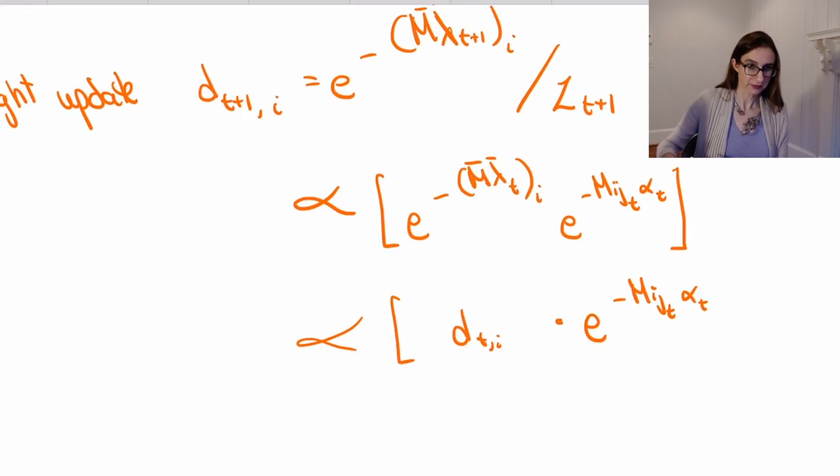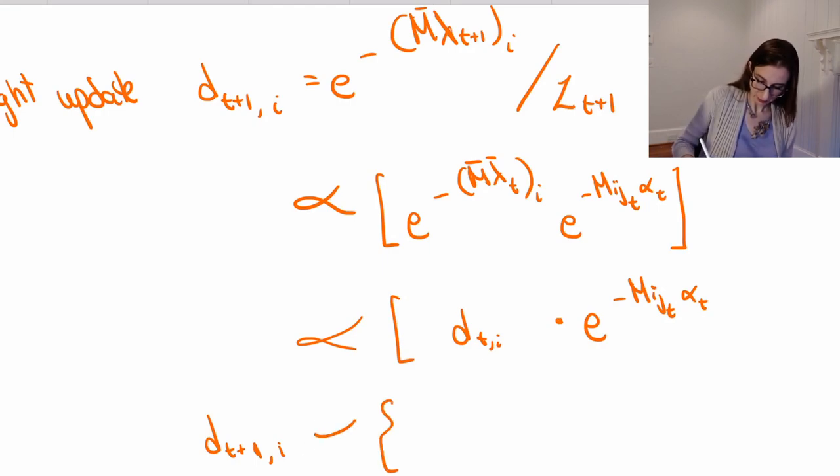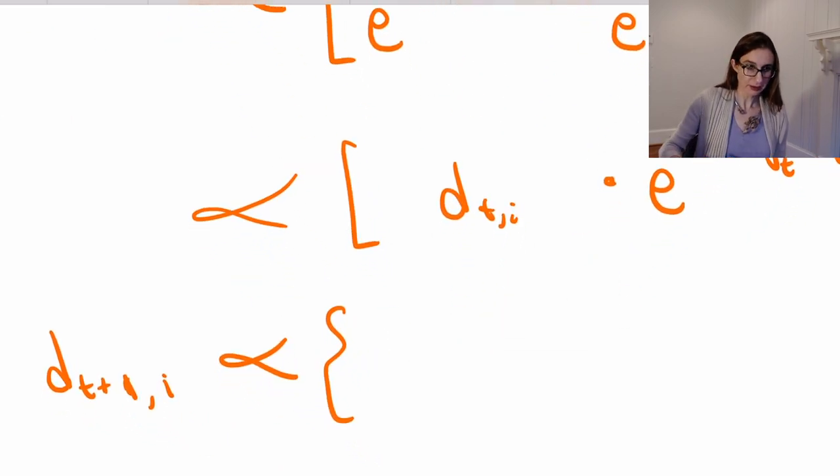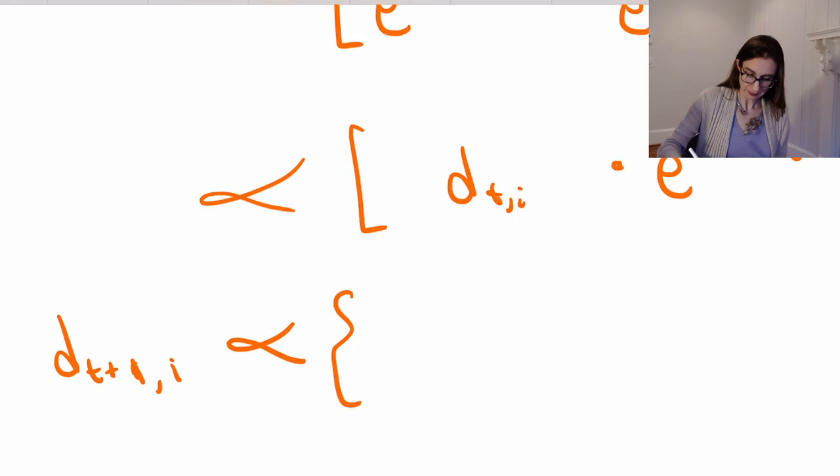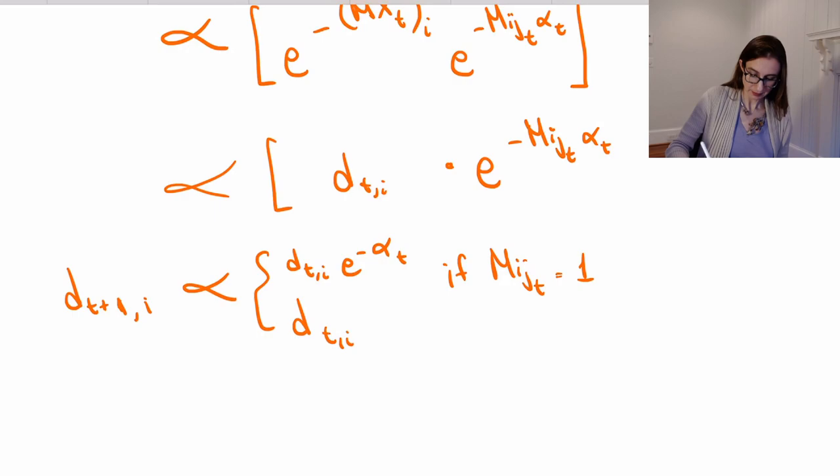So what that means is that dt+1,i is proportional to—this equals either dt,i times e to the negative alpha t if m i jt equals 1, and it equals dt,i times e to the alpha t if m i jt equals minus 1.